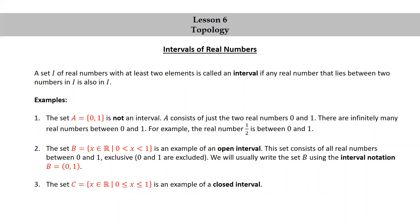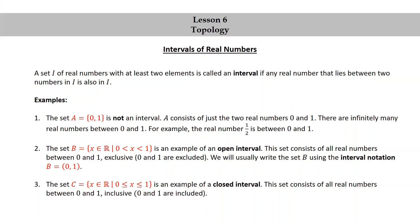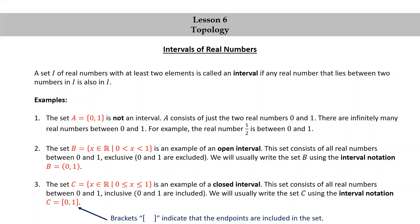The set C, consisting of the real numbers x such that 0 ≤ x ≤ 1, is an example of a closed interval. This set consists of all real numbers between 0 and 1 inclusive — by inclusive, I mean that 0 and 1 are included. We will usually write the set C using interval notation as [0, 1] in brackets. The brackets indicate that the endpoints are included in the set.